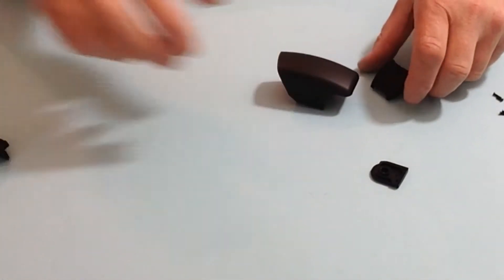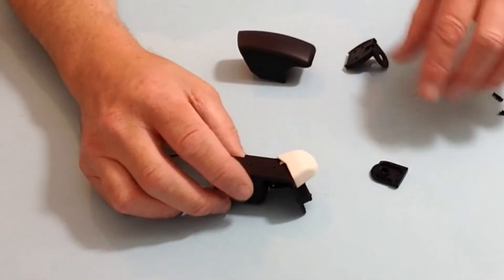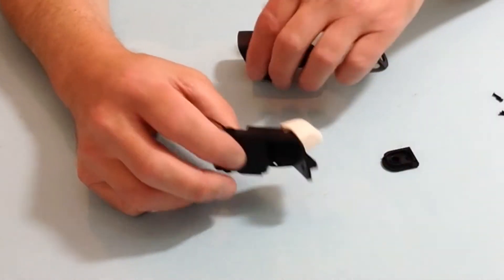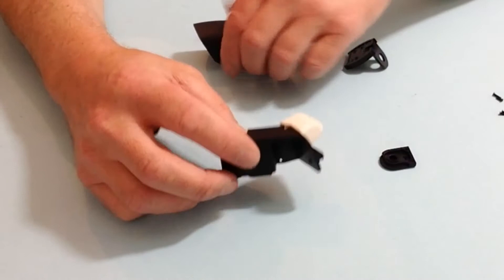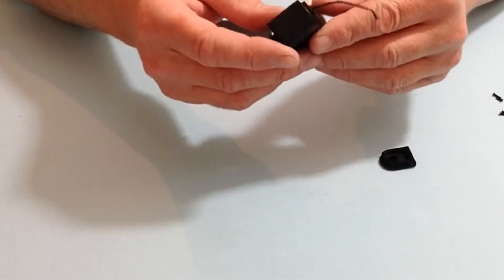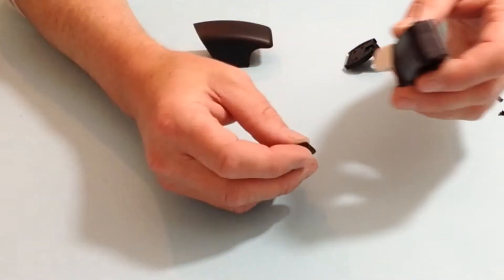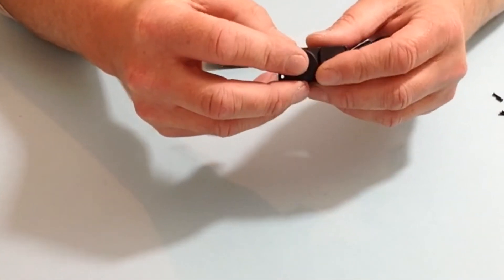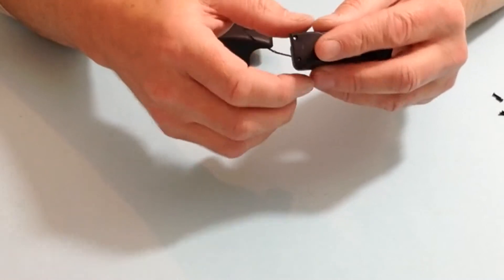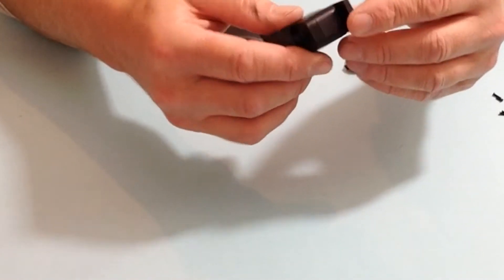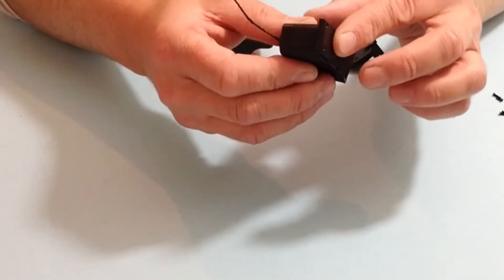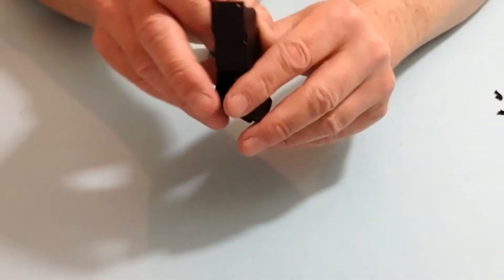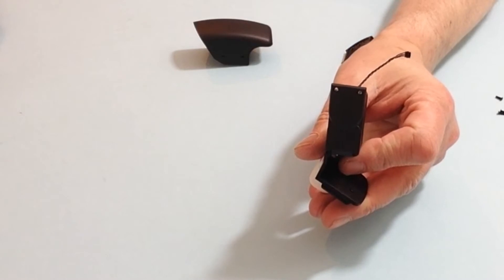In stage 17 we're going to be continuing with the assembling of Robbie's arm. Take the assembly from the previous stage and take the servo front panel that was supplied and place it over the servo. As you can see, when it's fitted it should look like that.